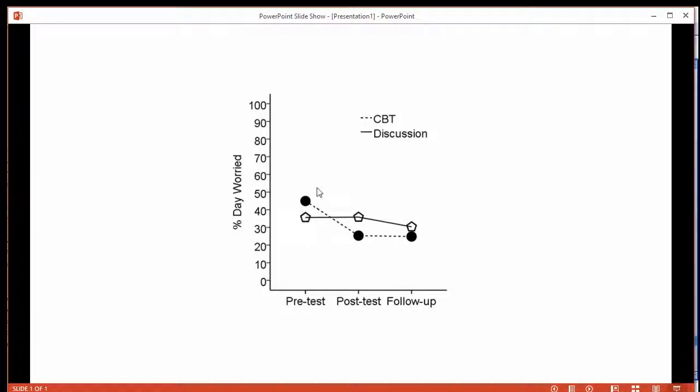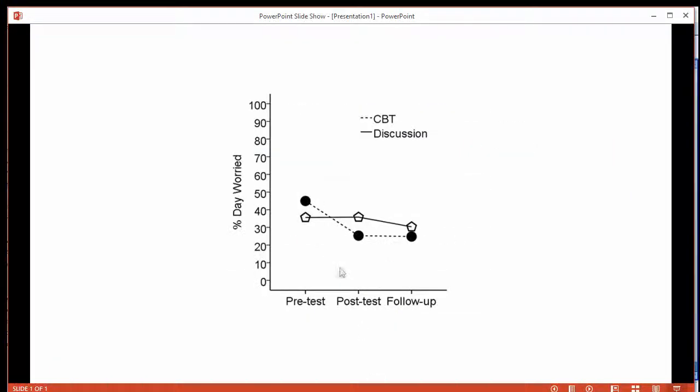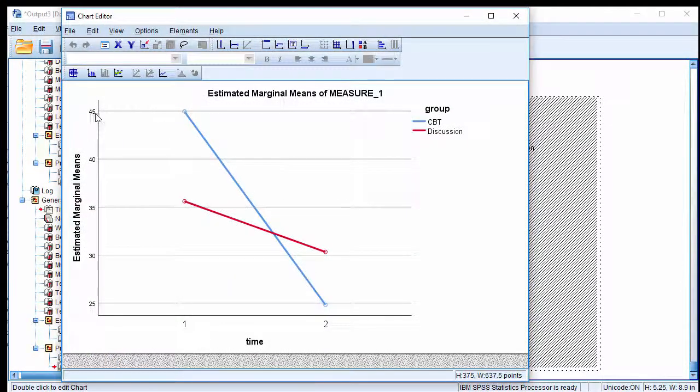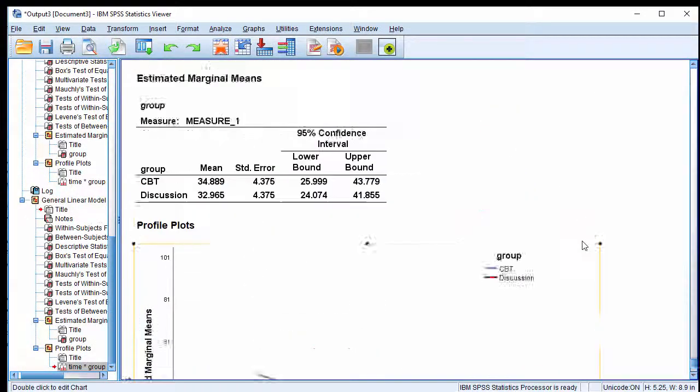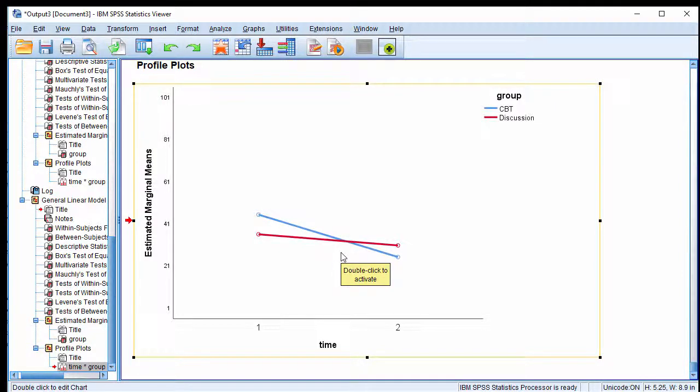And so perhaps surprisingly, the interaction is not observed comparing pre-test to follow-up. If you had just the lines here, this is what is being depicted if you ignored these means here. This is what it would look like. We've got this is pre-test and this is follow-up. Numerically, there is a difference in the magnitude of the change comparing CBT to discussion group therapy, it's just not identified as statistically significant. It was kind of close, the p-value was 0.075, but it wasn't statistically significant.